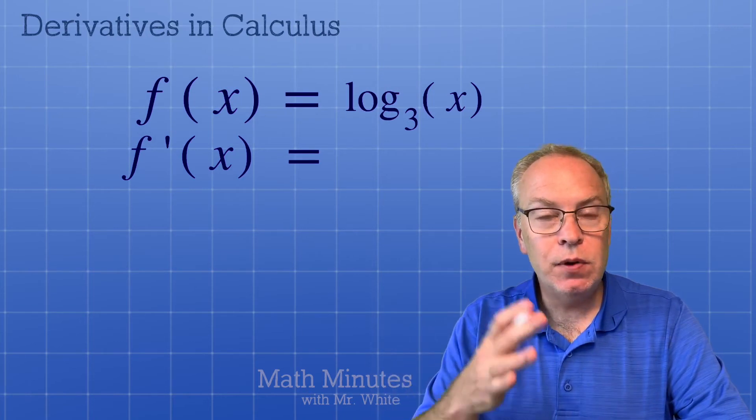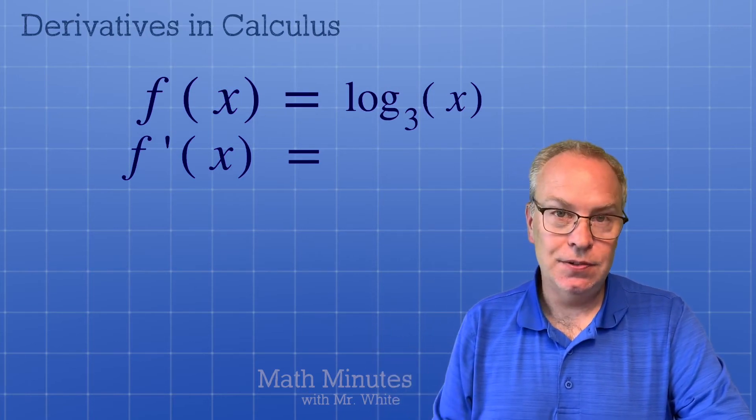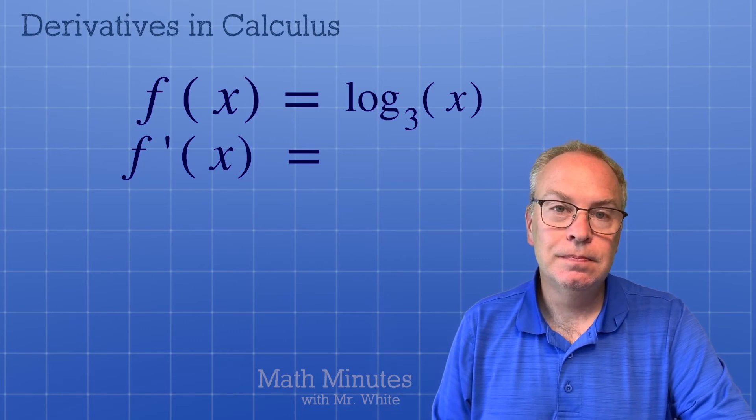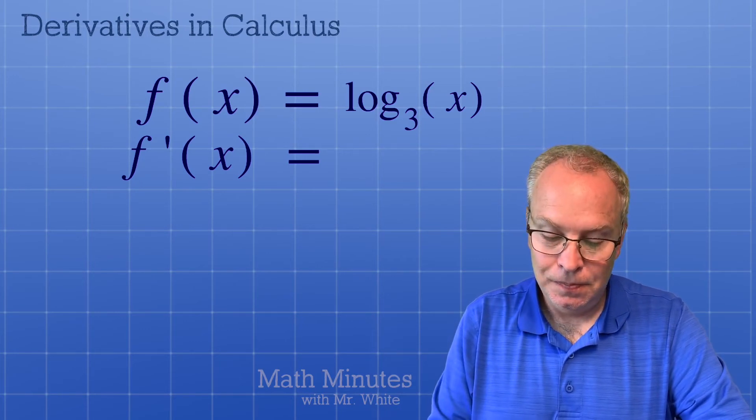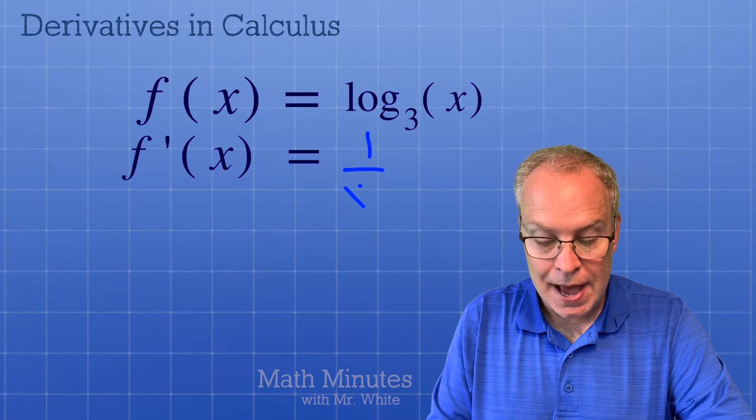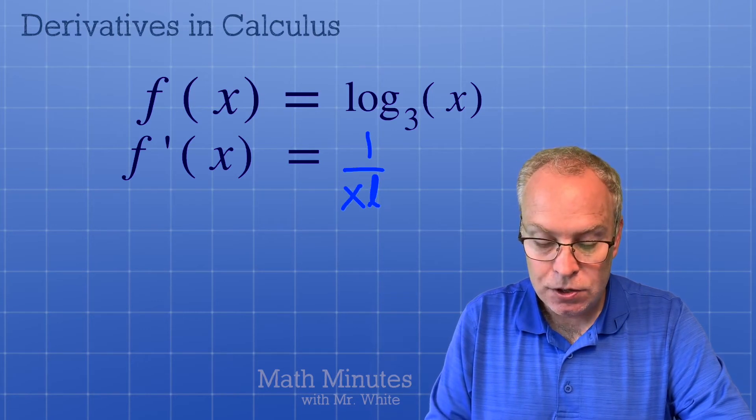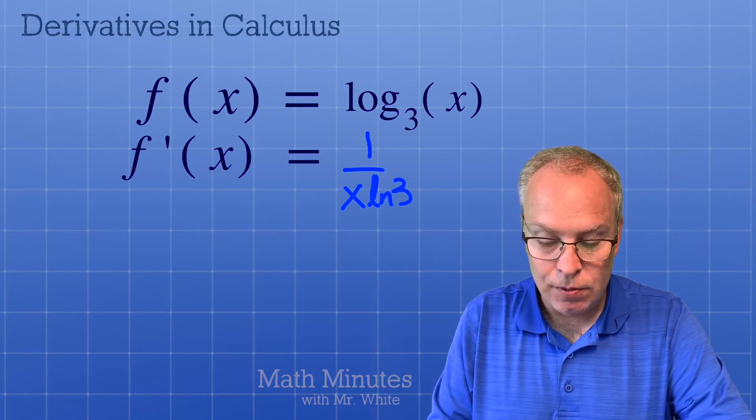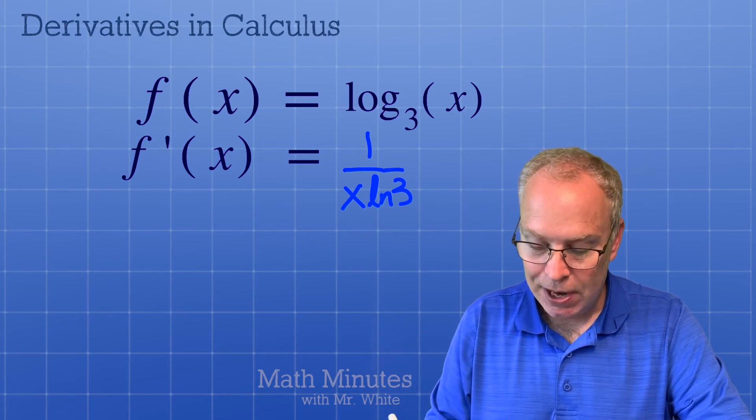What's the derivative when the base is different? Let's say log base 3 of x. 1 over x again, but don't forget to tack on that ln 3. So the natural log of the base needs to be in the denominator.